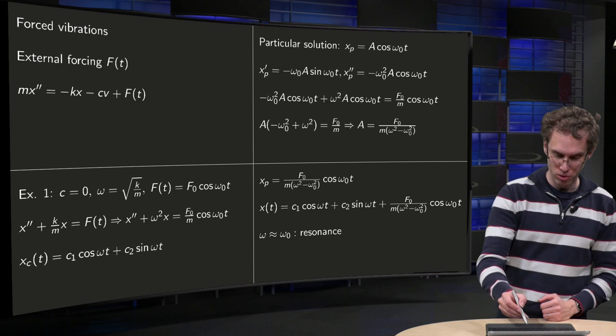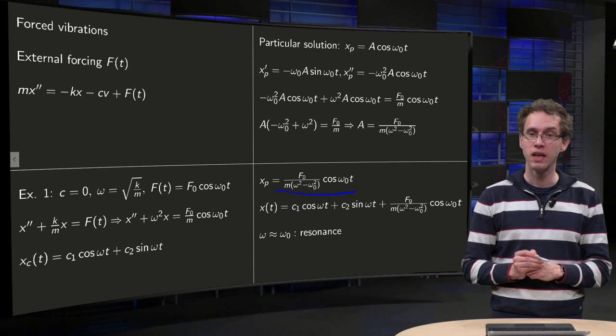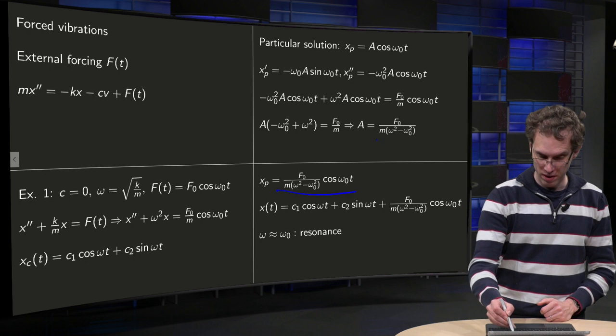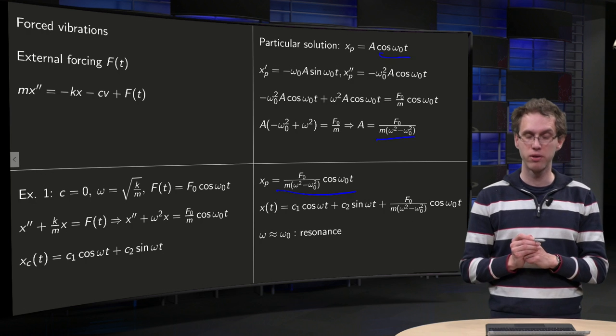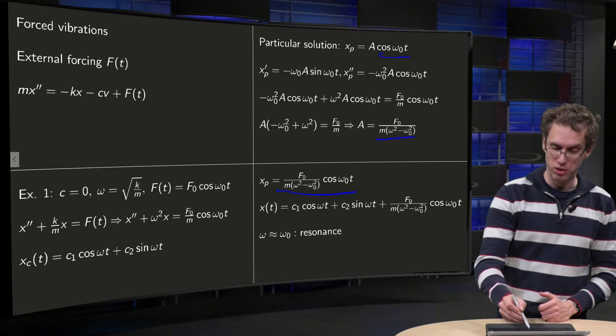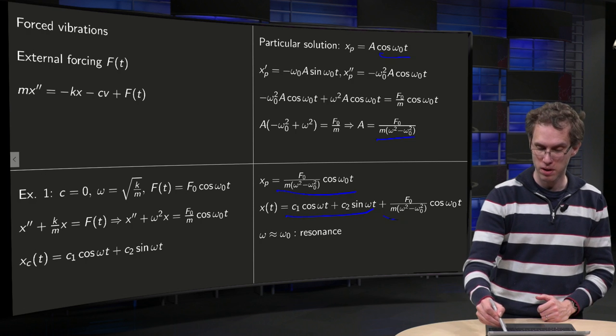So we have our particular solution over here, because we have A times cosine omega_0 t. So our total solution is the homogeneous part plus the particular part.